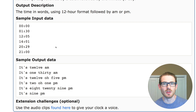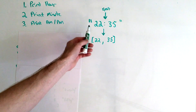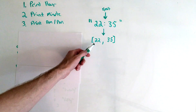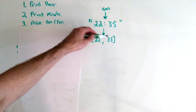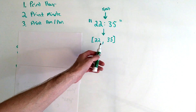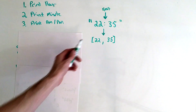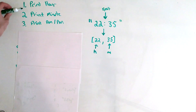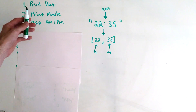Let's start breaking this down and implementing it on the whiteboard. Looking at the example 22 colon 35, the first thing that comes to mind is extracting the hours separate from the minutes. You can split this string on the colon, which gives you an array of 22 and 35 as strings, then convert those to integers using the parseInt method. When you end up with 22 and 35, we're going to use these to generate three sub-problems.